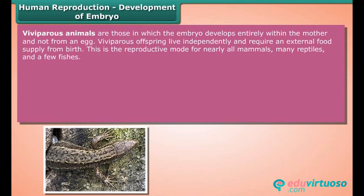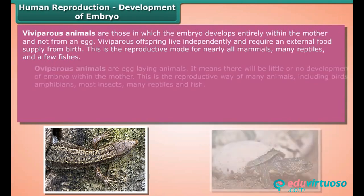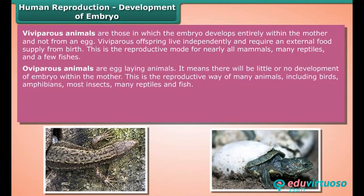Oviparous animals are egg-laying animals, meaning there will be little or no development of the embryo within the mother. This is the reproductive way of many animals including birds, amphibians, most insects, many reptiles, and fish.